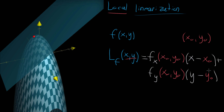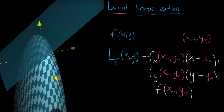To this entire expression you then add the value of the function itself at the input point. When you plug in x₀ and y₀, the first term goes to zero because x₀ minus x₀ is zero, and the second term also goes to zero. This is why we paired up and organized the constants this way — it ensures that your linearization actually equals the function itself at the local point.